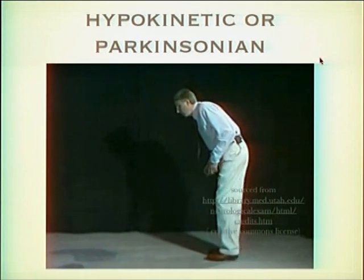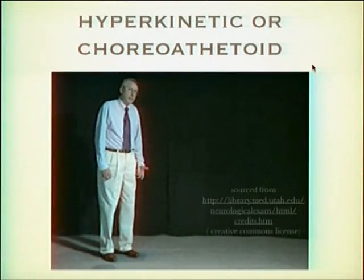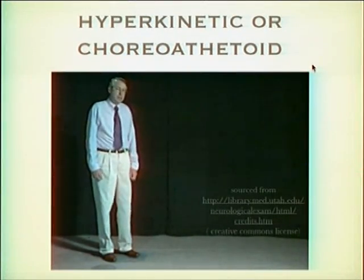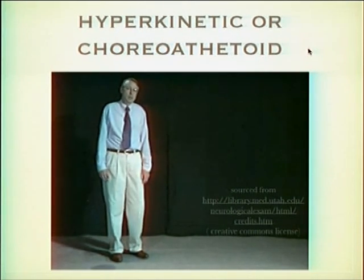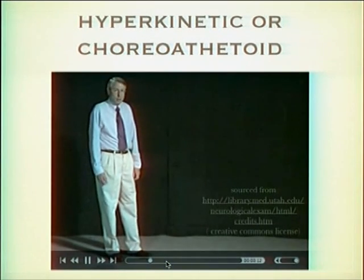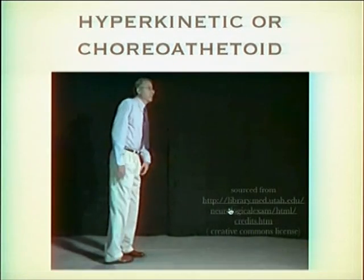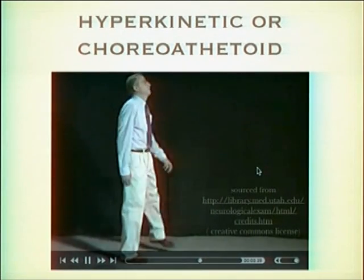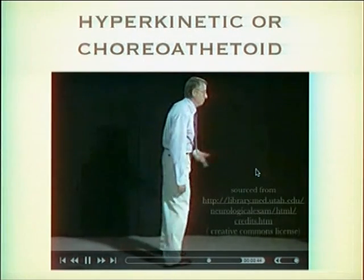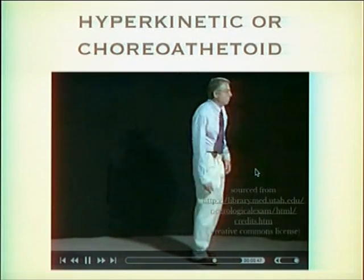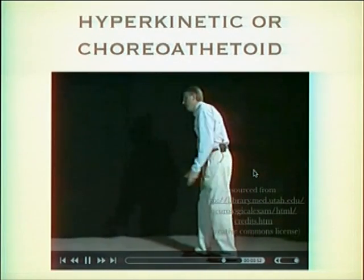As opposed to hypokinetic gait, you get a hyperkinetic gait in choreoathetoid patients, in which there are involuntary movements with every attempted contraction. Much of the choreoathetoids we see are not able to walk, but if they are able to walk, they tend to create rotational involuntary movements - almost comical - but surprisingly they do not fall. The intensity of these movements tends to increase as they walk faster.